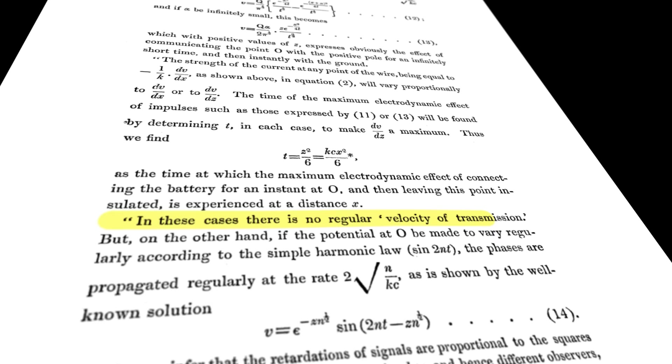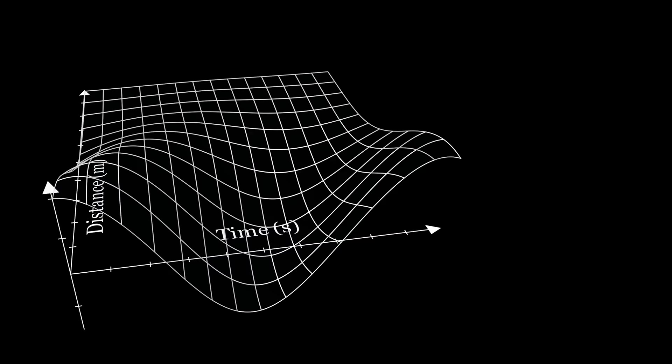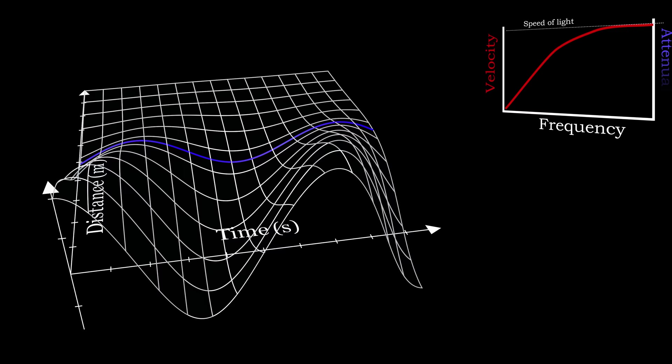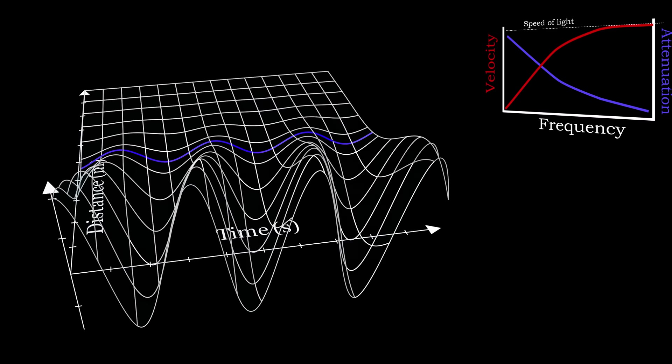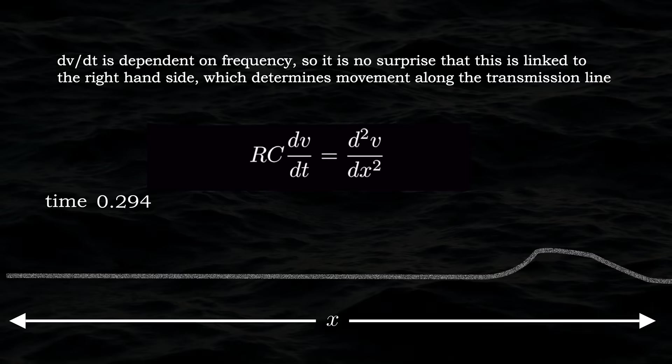Another remarkable consequence of Thomson's analysis is the correct observation that there is no regular velocity of transmission. This is the very first time this idea was presented in the context of signal propagation. Thomson's equations predict that higher frequencies will travel at a higher velocity but attenuate faster than lower frequencies. This was before we knew that electricity had an upper speed limit of the speed of light. Thomson explains that for a signal like a telegraph pulse, which we now know is made up of the sum of many frequencies, the pulse will smear and distort. Basically, this is the first time signal propagation was described as a frequency-dependent phenomenon.